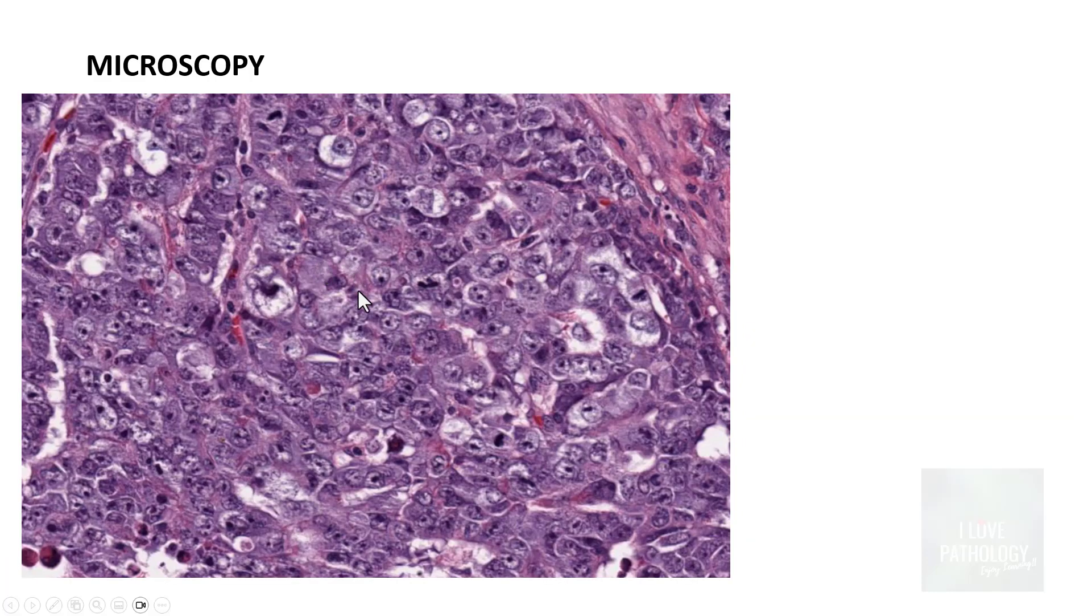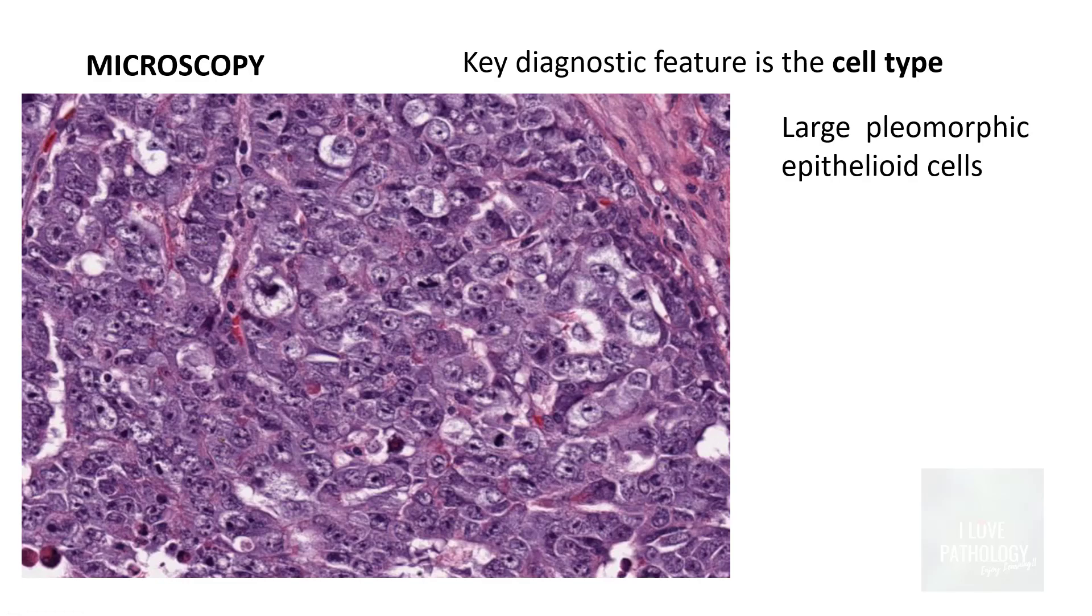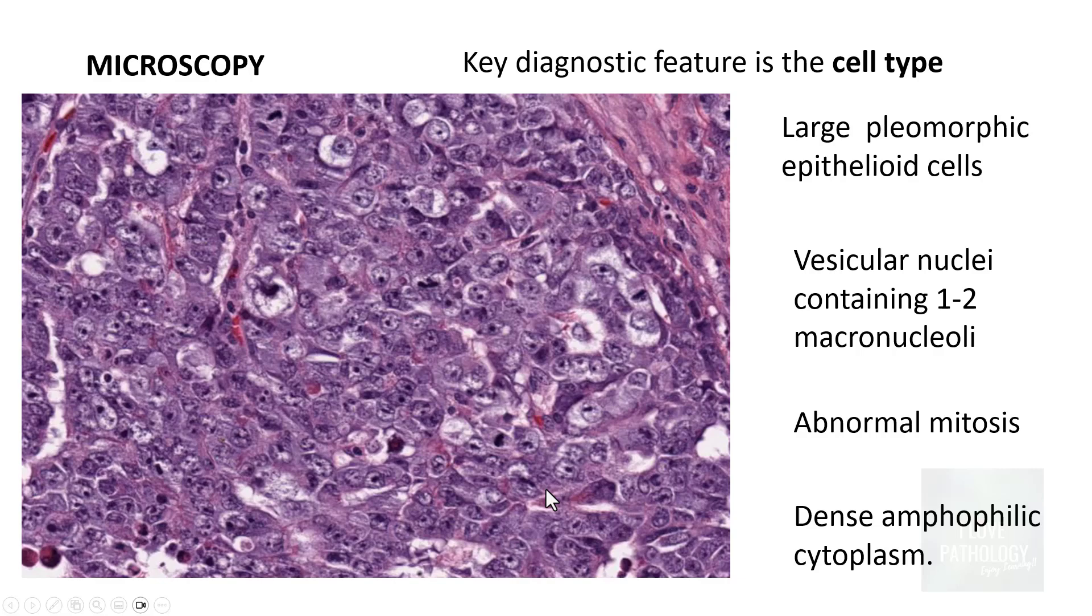The most important characteristic feature of embryonal carcinoma is the cell type. That's very diagnostic. They are large pleomorphic epithelioid cells which contain vesicular nuclei and a very prominent nucleoli, often referred to as macronucleoli. There can be one or two macronucleoli. Look at this, so this is the nucleus and that's a macronucleoli. You can often see abnormal mitosis and the cytoplasm is neither pink nor blue, it is amphophilic cytoplasm.